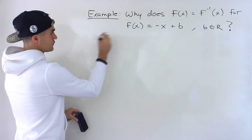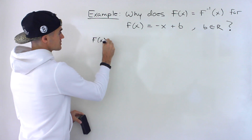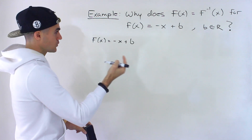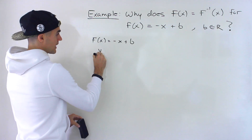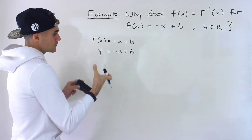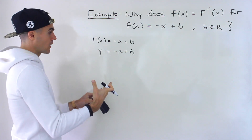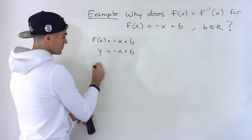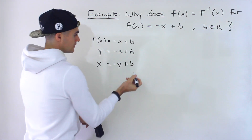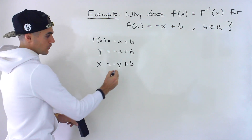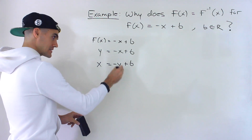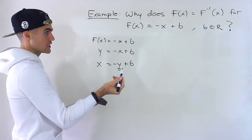If we take this function f of x equals negative x plus b, when we're finding the inverse of a function, what are the steps? We have y equals negative x plus b — this and this are the same thing. The first thing to do is to interchange the x and y's. So this y would become an x, and this x would become a y. Then what we want to do is isolate for that y.